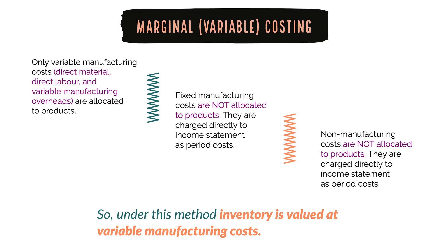Now let's start with marginal costing. Marginal costing refers to the additional cost arising as a result of producing one additional unit, or the cost saved as a result of producing one less unit. Hence, marginal costing takes into account only variable manufacturing costs while calculating product costs.